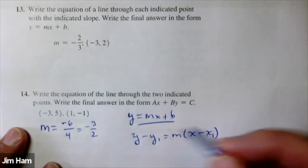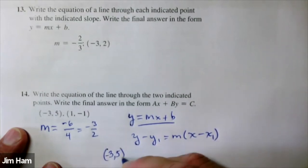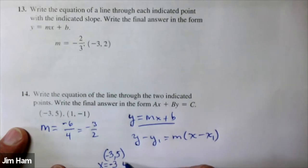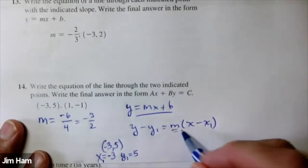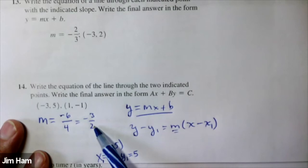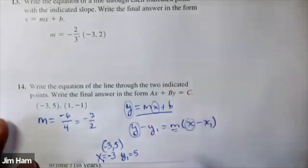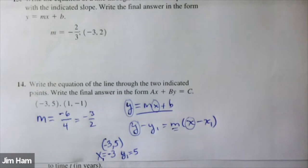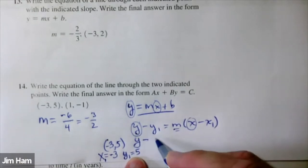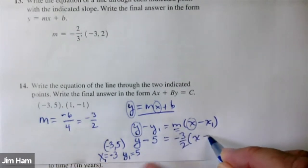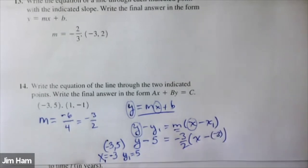There are two different equations that you could write. The first one is if you use the point negative five, three. The x-coordinate, we'll call that x1, is negative three, and the y-coordinate we'll call y1. And then the slope is what you calculated. This y and this x — just like in the slope-intercept form — when you're writing equations, you don't put numbers in for those immediately. You just put numbers in for everything else. So y minus the y-coordinate five equals the slope, and then x minus the x-coordinate. Then you'd have to simplify from there.